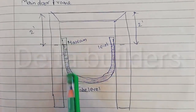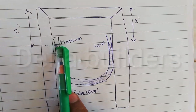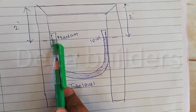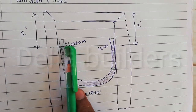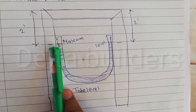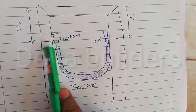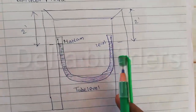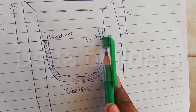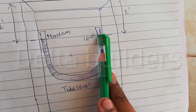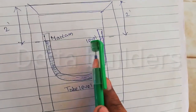We mark the tube level and fill the tube level. First, second — we use the tube level. Keep in the tube level. First this level, level 2.